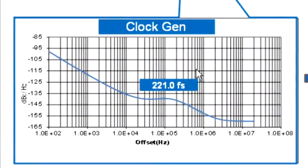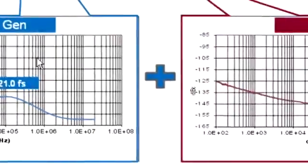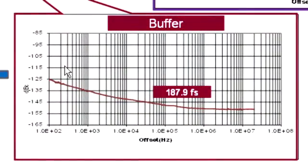In the lower left we see the original phase noise of the clock generator, represented by the blue trace, and the integrated jitter for this particular phase noise profile is 221 femtoseconds. In the next plot to the right we see the residual noise plot of the buffer itself. This is measured without the clock source, and shows the integrated jitter of the clock buffer is 187 femtoseconds.